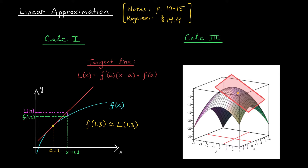Well, the situation in Calc 3 is quite similar. Maybe it's not too hard to find the equation of our tangent plane at this point AB. But we're really interested in the value of our function at some other point nearby. It could be the case that plugging that point into our function leads to a really awful computation. So instead, we might be willing to compromise — we can use the value of the tangent plane at this point, which is pretty close to the surface of our graph, as a good approximation.